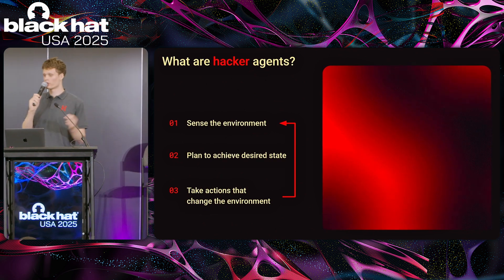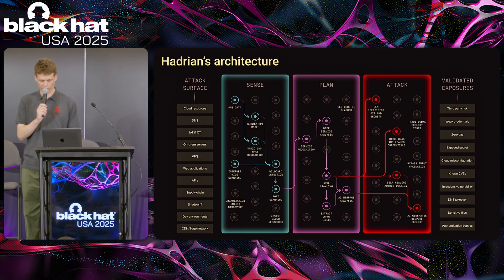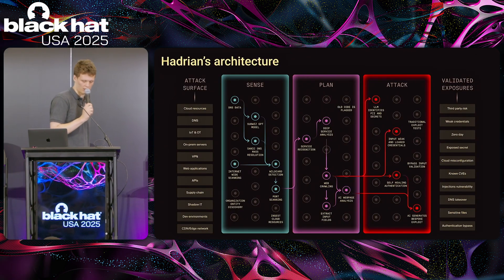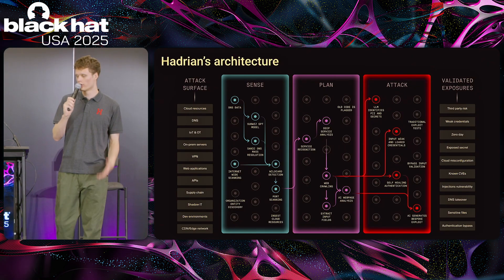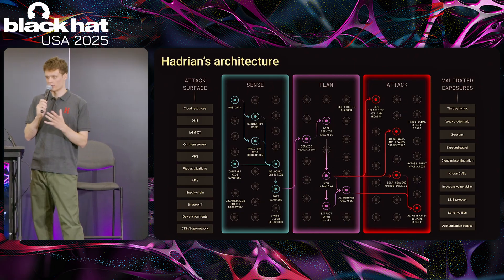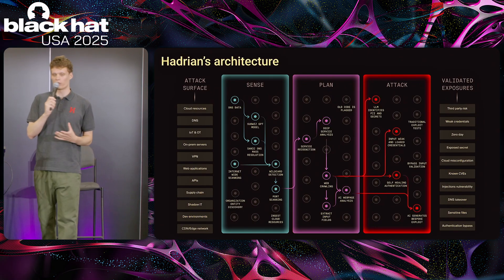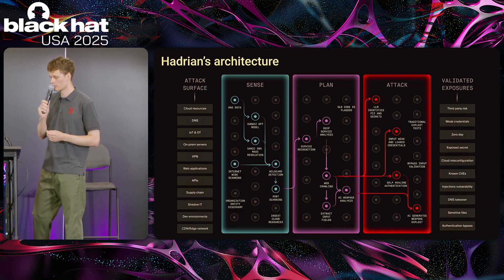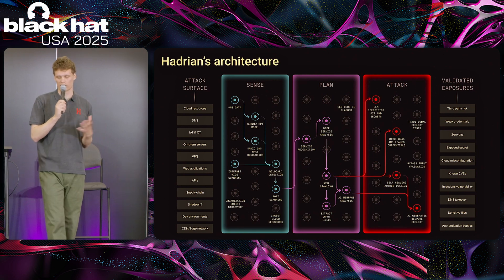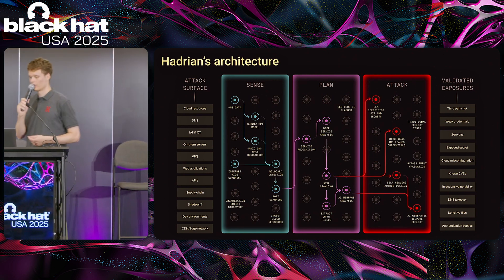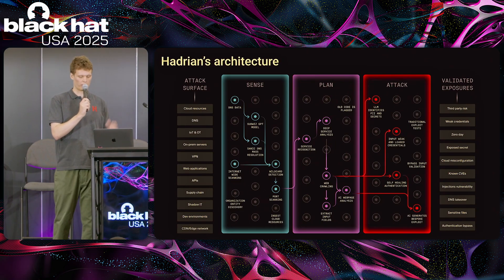This is much more similar to that human-level behavior — that more intuitive way of finding vulnerabilities. Stepping back and looking at Hadrian's architecture as a whole, we break it up into three distinct phases: sensing, which is about finding all the different assets of an organization on the internet; planning, which is figuring out what those things are; and attacking, which is actually running many different types of exploits to find an exploit based on what we saw in the planning phase.